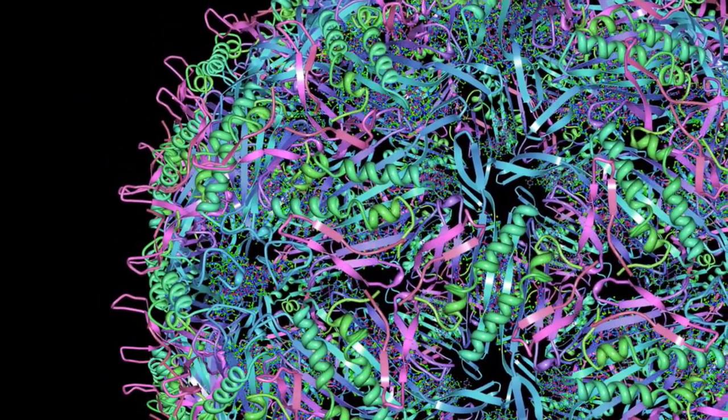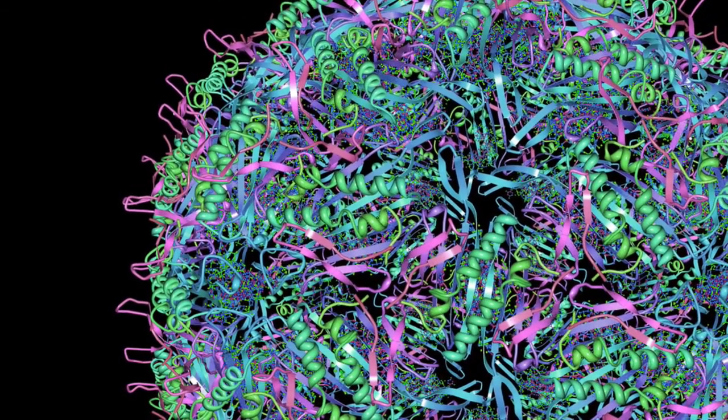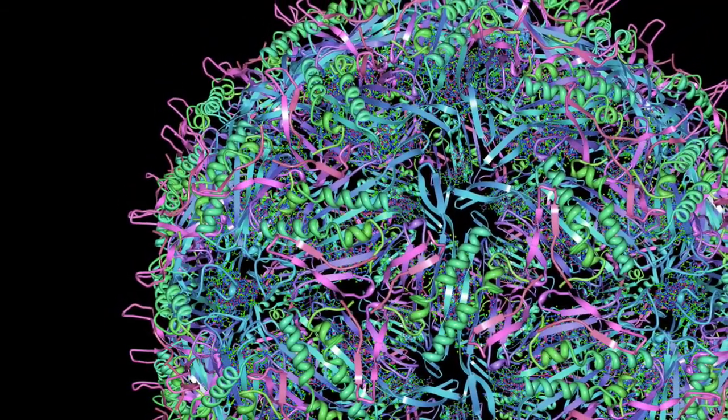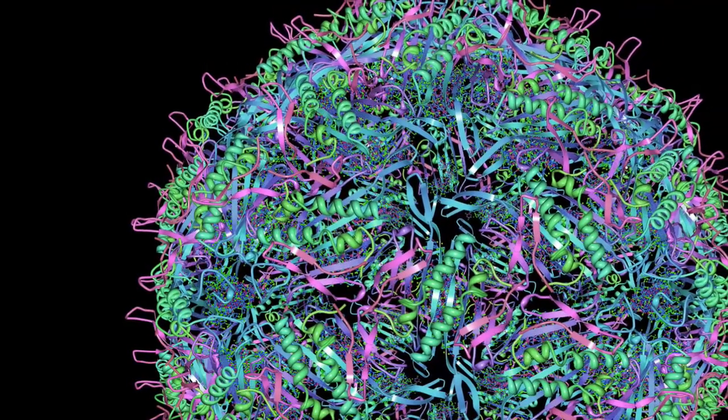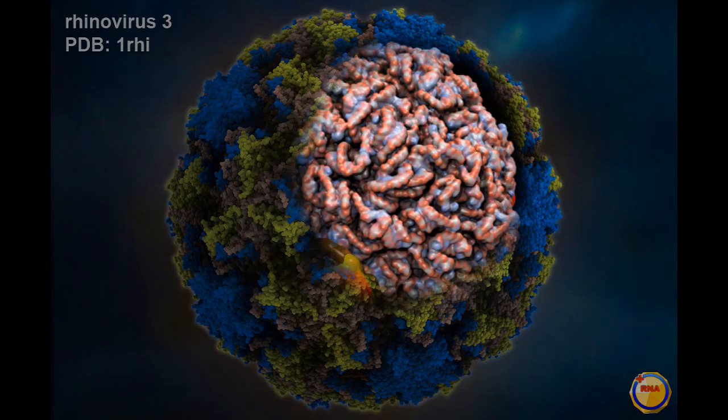This molecular view shows its shell made of 240 beautifully coiled protein strands. And, cutting away the shell, we find a single long RNA strand containing 11 genes.